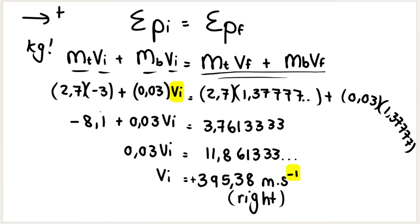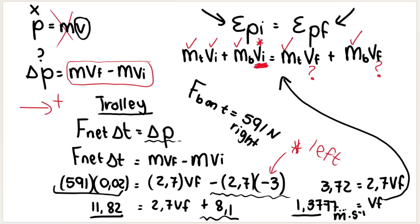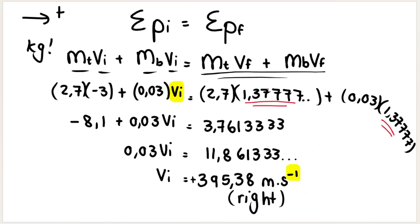An important note: do you see that I didn't round off until the very end of the question? When I calculated the final velocity of the bullet-trolley combination, I kept all those decimals — 1.3777... You cannot round off in the middle of the question.